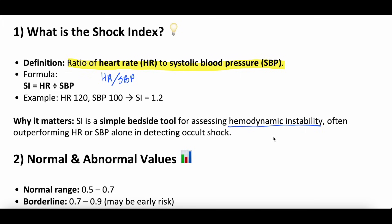The shock index often outperforms just looking at heart rate alone or systolic blood pressure alone. We use it to ask: is this patient at high risk for further decompensation? It picks up on subtle patients who maybe aren't overtly hypotensive yet — just some low-grade tachycardia, systolic blood pressure normal but on the lower end. If you're not being thoughtful, you might pass that patient as quote-unquote stable.